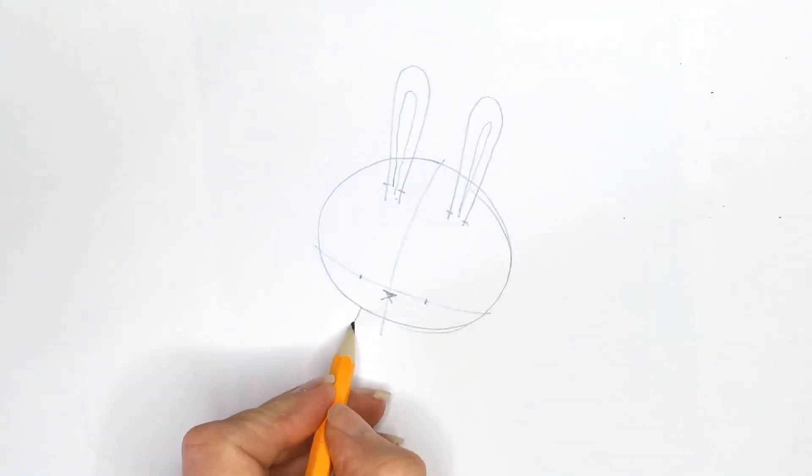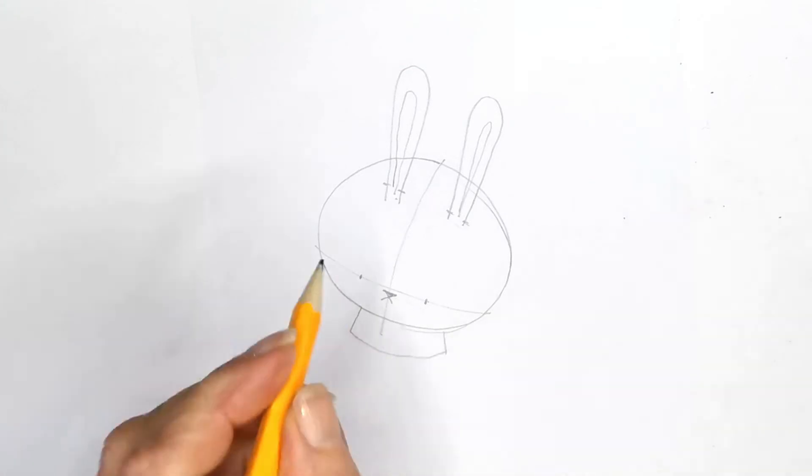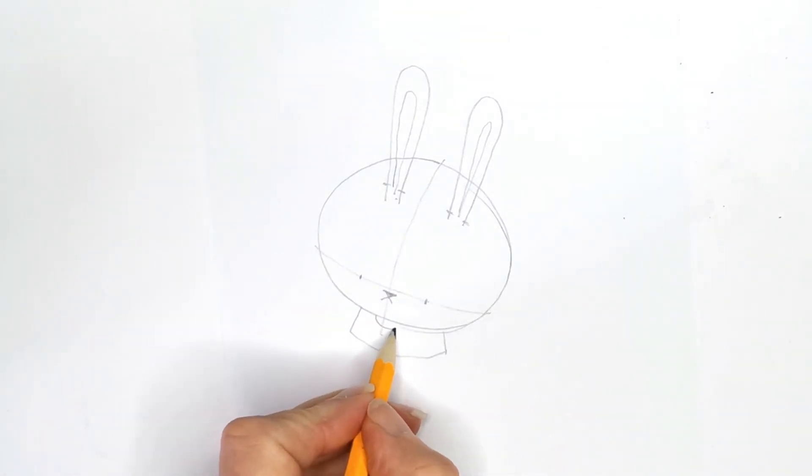He's very simple. His body is very small because it's underneath him. We're looking down at him.